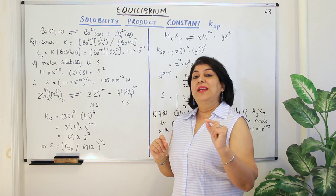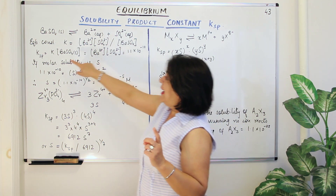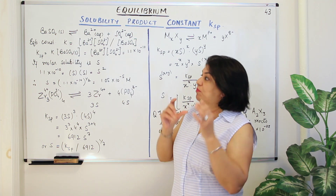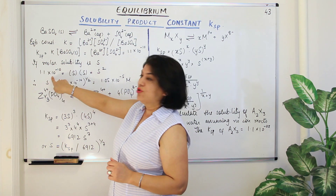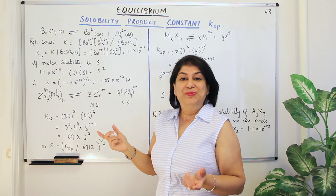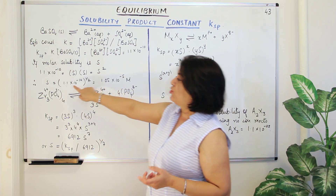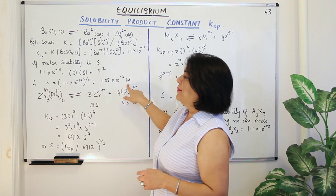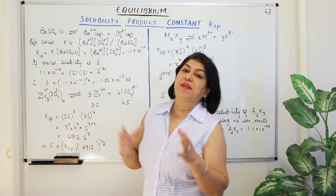From this we can calculate the molar solubility, the value of S. KSP is the solubility product constant, and from KSP you can calculate molar solubility S. If S² = 1.1 × 10⁻¹⁰, then S = (1.1 × 10⁻¹⁰)^(1/2), the square root. Calculating this gives approximately 1.05 × 10⁻⁵, and the square root gives S ≈ 1.05 × 10⁻⁵ M — moles per litre — as the molar solubility of barium sulphate.